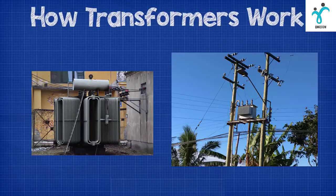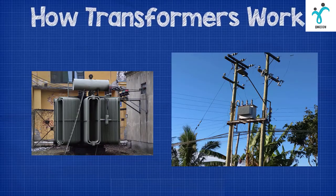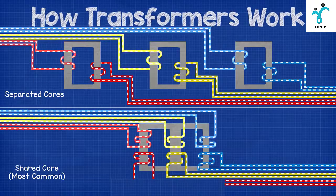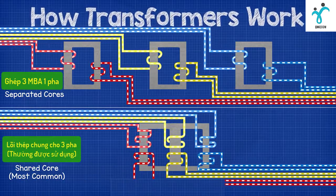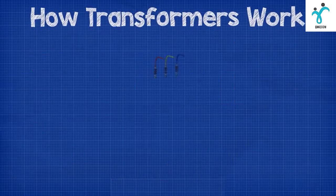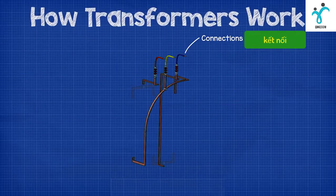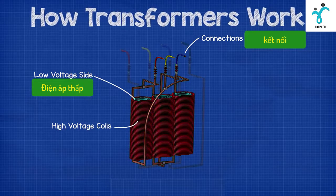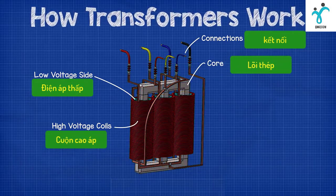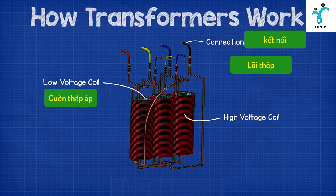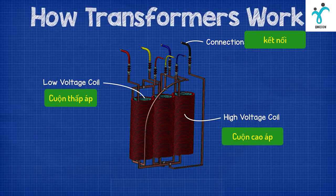The transformers for commercial buildings and power stations are usually in a three-phase configuration. You'll see these placed around your cities and towns and they'll look something like this. These three-phase transformers can be made from either three separate transformers that are wired together, or they can be built into one large unit with a shared iron core. In this setup the coils will typically sit concentrically within one another, with the higher voltage coil on the outside and the lower voltage coil sitting on the inside. These coils are insulated from one another so that only the magnetic field will pass between them.